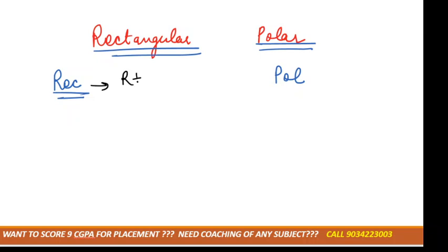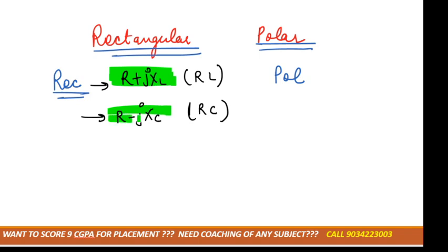Rectangular form is in the form of R plus jXL if there is a combination of R and L, and if there is a combination of R and C then rectangular form is denoted by R minus jXC. So for inductor it is plus jXL but for capacitor it is minus jXC.